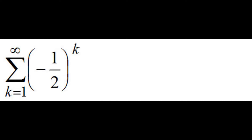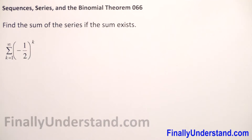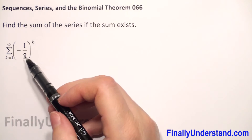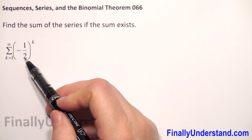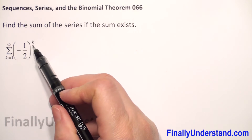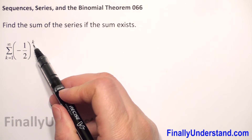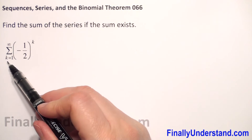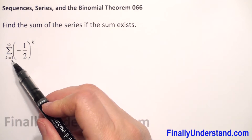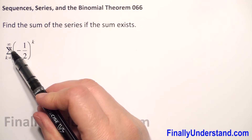Find the sum of the series if the sum exists. We have the sum of negative 1 over 2 to the power k, from k equals 1 to infinity.